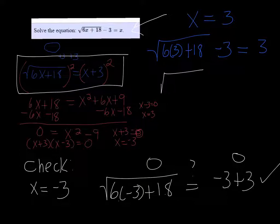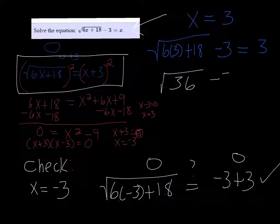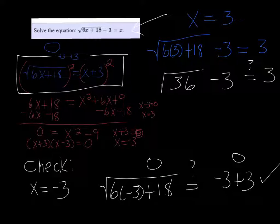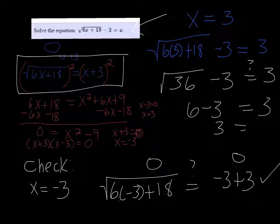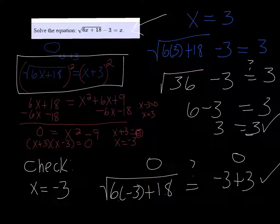So here I'm going to get the square root of 18 plus 18, which is 36, minus 3. Does that equal 3? Well, this is going to be 6 minus 3, and 6 minus 3 is 3, so yes, they both work.